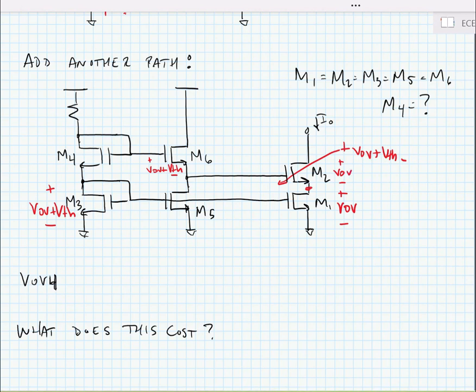Well, if this is the case, then that tells us that we need to make the Vov plus Vth for M4 a little bit bigger. In fact, we need two Vov plus a Vth for M4. And now if we do a KVL around this loop...